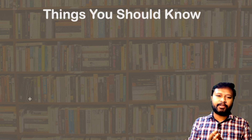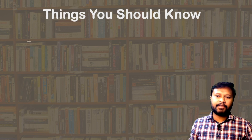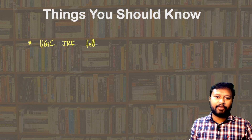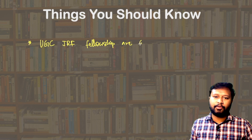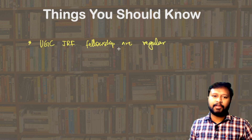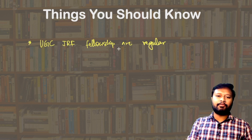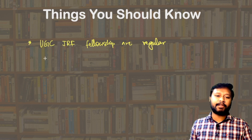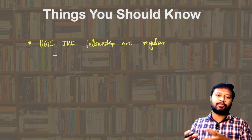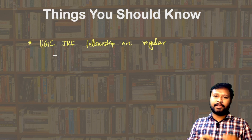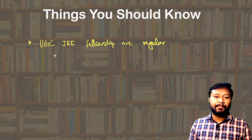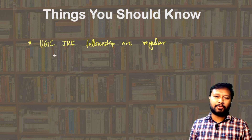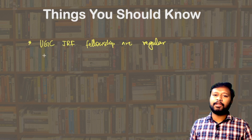There are a few more important points to know. UGC JRF fellowship payments are more regular — you receive the fellowship amount credited to your bank account approximately every month. With CSIR JRF, you may have to wait three to six months before receiving a lump sum payment covering all those months. This can be very difficult financially. I have friends with CSIR JRF who struggle with this a lot. So in terms of regularity, UGC JRF is a better option.